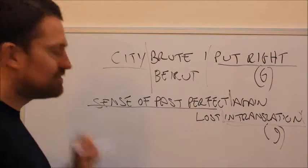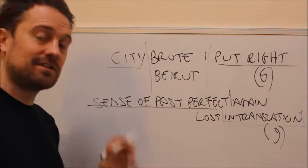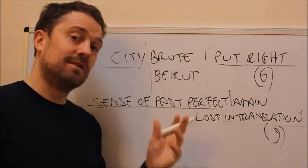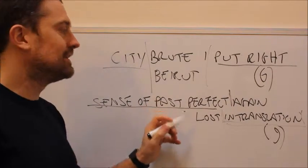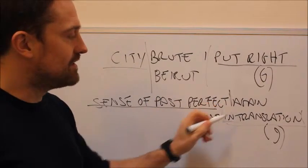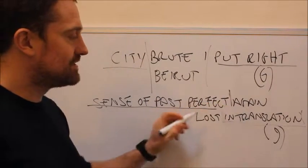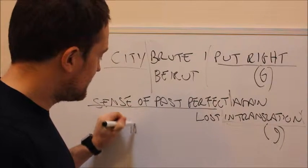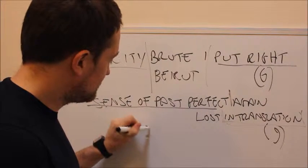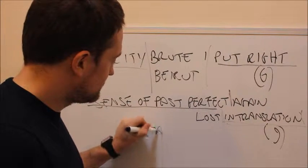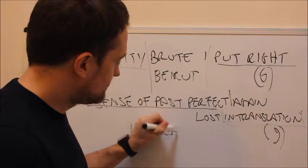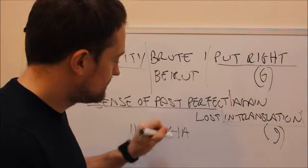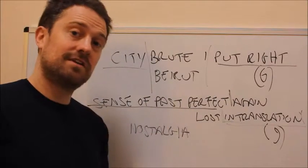'Sense of past perfect' is a huge definition, but they do happen — so that's nothing to be scared of. And then you've got those nine letters to work with. As soon as you look at that — nostalgia. That's another very simple type of anagram clue.